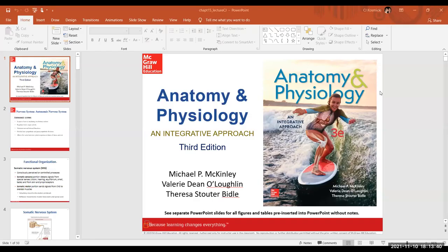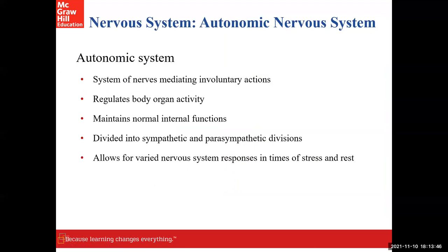Let's go ahead and welcome in the autonomic nervous system. We have a pretty decent idea about the nervous system, how neurons work, what cells are where, a pretty generalized idea about the differences between the functional and structural organization of the nervous system. The autonomic nervous system is going to be part of your overall nervous system when we're talking about the functionality or the physiology of the nervous system.